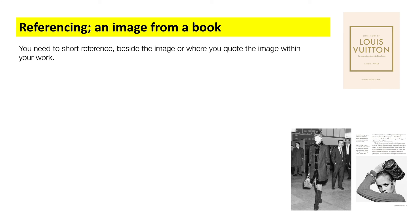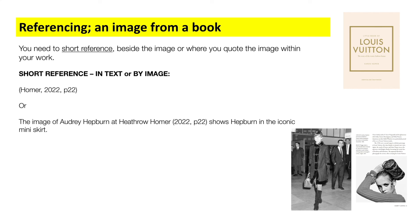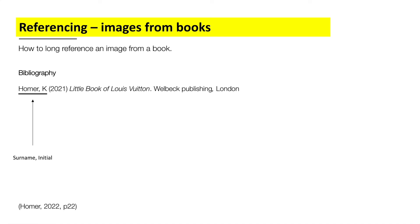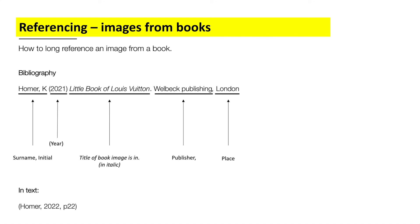For image referencing from a book, you put the short reference beside the image — the author's surname and year — but for a book you also add the specific page number where the image appears. For example, if you mention the author's name in the text, you just put the year and page as the reference. The long reference follows the same format as before: author's surname and initial, year in brackets, title of the publication in italic, a full stop, the publisher, and then the location. The in-text reference includes the surname, year, and specifically the page number for a book.